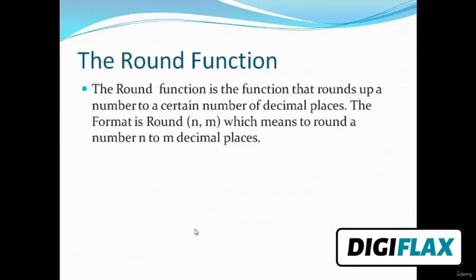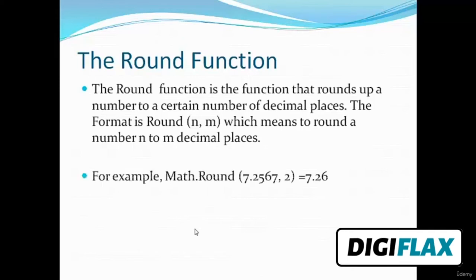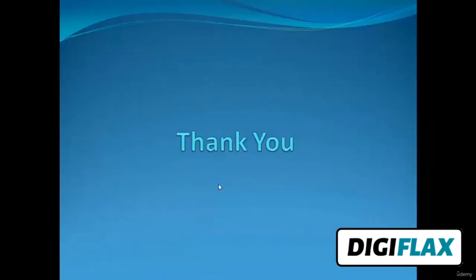The Round function rounds a number to a certain number of decimal places. The format is Round(n, m) to round number n to m decimal places. For example, rounding 7.2567 to 2 decimal places returns 7.26. The syntax is Math.Round, which returns a numeric value to be stored in a variable. This is about math functions used to do complex calculations. Thank you.